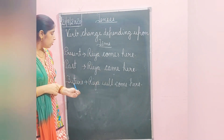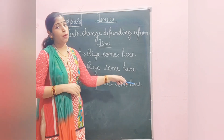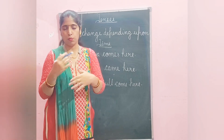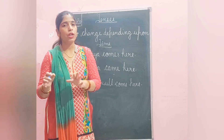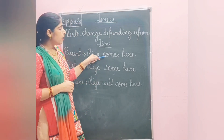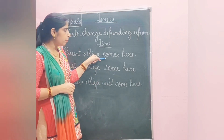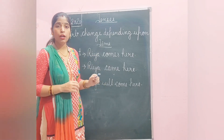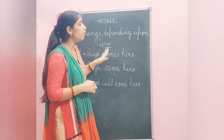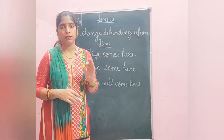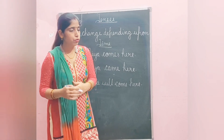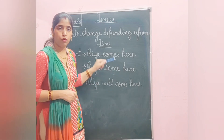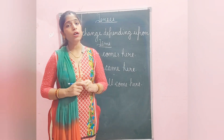So 'came' is past tense. Now future: 'Rhea will come here' means Rhea is going to come — maybe today, maybe tomorrow, maybe this evening. So here, the verb 'comes' in present tense changes to 'came' in past, and 'will come' in future. This is called the forms of verb. The verb has three basic forms — present, past, and future — which are called the forms of the verb.